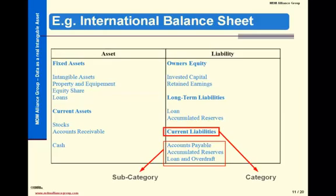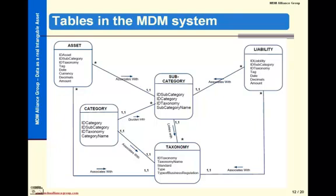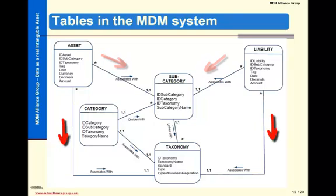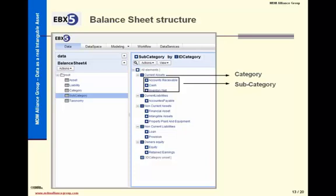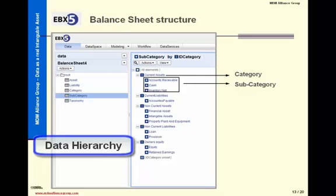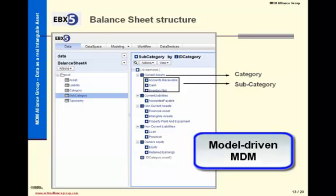I will take the example of an international balance sheet structure with categories and subcategories of assets and liabilities. This data model is the unified view of financial information describing the balance sheet in relation to XBRL taxonomies. This is a logical data model. We can see that assets and liabilities are linked to balance sheet subcategories and to XBRL taxonomy items depending on the subcategories. Every subcategory is attached to XBRL taxonomy items and to a balance sheet category. We have declared this data model in the MDM tool EBX, developed by Orchestra Networks. This screen shows the data hierarchy of the balance sheet with some categories and subcategories. It's important to say that this is a model-driven MDM, meaning that all user interfaces are automatically generated without any specific software development.